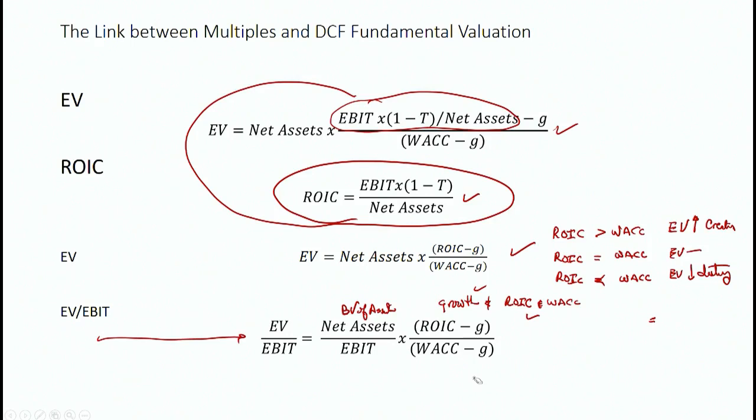If the return on invested capital is just equal to the weighted average cost of capital, then this ratio is going to be one. What it means is that even if the firm's sales grow and they invest more, they're not going to increase the value today. Nobody's going to pay for that today because those projects are basically zero NPV projects.